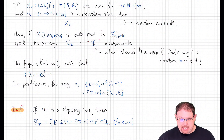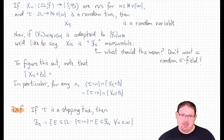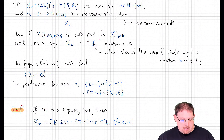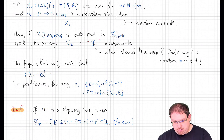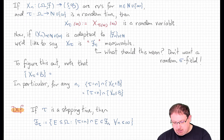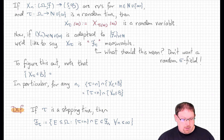Generally speaking, if x_n is any sequence of random variables defined on some measurable space, taking values in some other measurable space, and we'll even allow x to be indexed by infinity, and if tau is any random time taking values in the positive integers and infinity, then we can define x_tau, a new random variable whose value at an outcome omega in the probability space is x at the time tau of omega, which for each omega is some n — that's x_n evaluated at omega. So this is our new random variable.